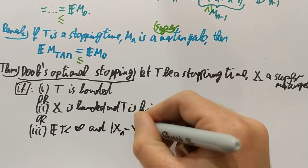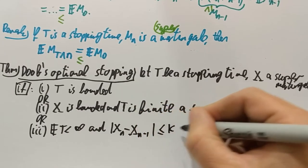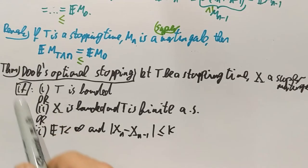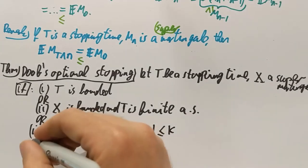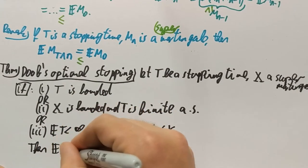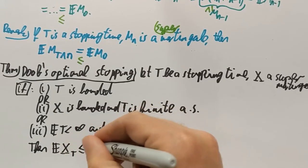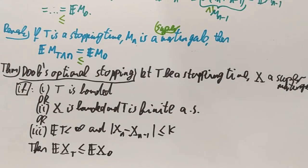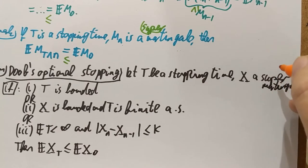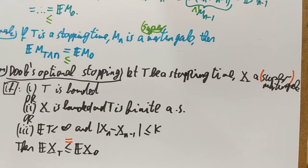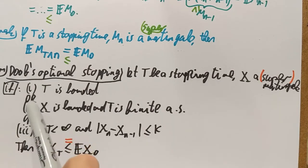Those are the conditions. If I have a stopping time, a supermartingale, and any one of conditions 1, 2, or 3 holds, then I can forget about the 'min N' and the expectation of X at the stopping time is bounded by E[X_0]. It's two theorems in one: for a supermartingale I have the inequality, and if X is a martingale and any one of the three conditions holds, I have equality.